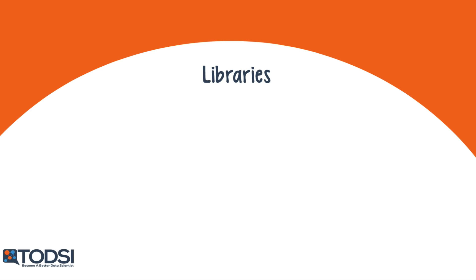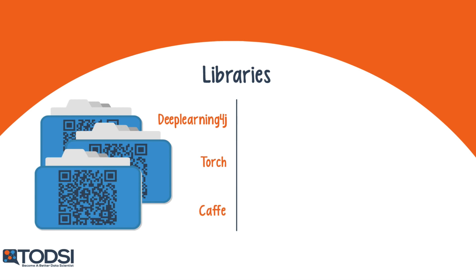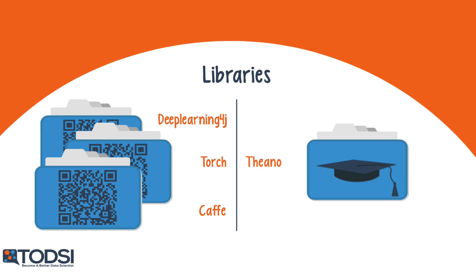If you're building a commercial app that requires the use of a deep net, your best bet is to use a commercial-grade library like Deep Learning 4J, Torch, or Caffe. For educational or scientific projects, you should use a library like Theano. Another notable library is DeepMat, and there are many others.